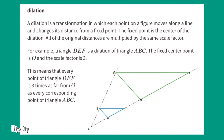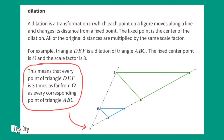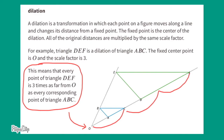Dilation: a dilation is a transformation in which each point on a figure moves along a line and changes its distance from a fixed point. The fixed point is the center of dilation. All the original distances are multiplied by the same scale factor. For example, triangle DEF is a dilation of triangle ABC. The fixed center point is zero, and the scale factor is three. This means every point of triangle DEF is three times as far from zero as every corresponding point of triangle ABC. Point C is some distance from zero; its corresponding point F would be three times that distance from zero. Similarly, point B's corresponding point E is three times the distance from zero.